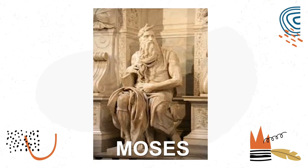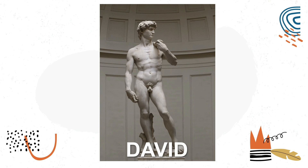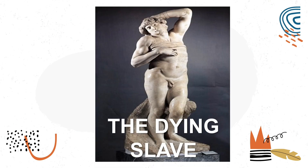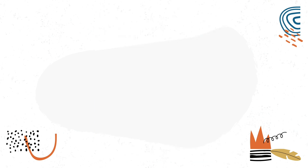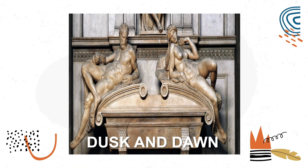Third is Moses, a sculpture of a prophet posed on a marble chair between two decorated marble columns with a long beard and horns on his head. Next is David, a marble statue of a standing male nude figure. The Dying Slave symbolizes the soul's struggle against the bounds of temptations and sins. Dusk and Dawn is the pair of sculptures on the tomb of Lorenzo de' Medici in the Medici Chapel in Florence. He also created the Last Judgment on the altar wall of the Sistine Chapel, depicting the second coming of Christ and the final eternal judgment by God of all humanity.